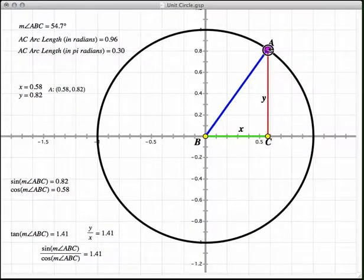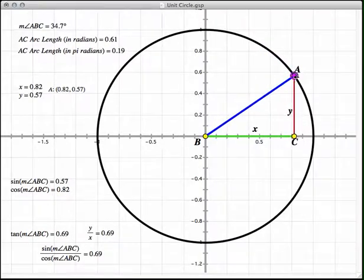I can move this to whatever I want, and you'll notice they always match. Let's say I move it right here. You'll notice 0.82 and 0.57 - the cosine is 0.82 and sine is 0.57. So it matches the X and Y.